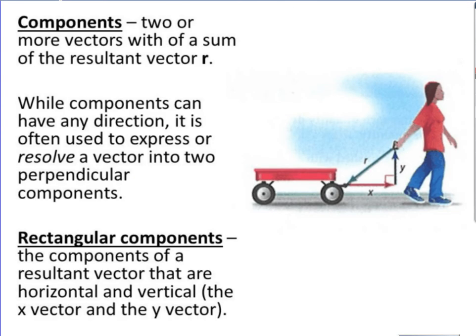A vector that's in component form is two or more vectors with a sum of the resultant vector R. While components can have any direction, it is often used to express or resolve a vector into two perpendicular components. To do this, we're going to look at rectangular components - the components of a resultant vector that are horizontal and vertical, or the x vector and the y vector.